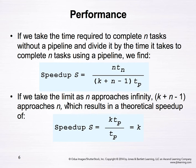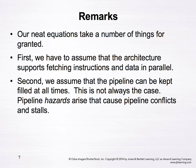If we take the limit as n approaches infinity, the term k plus n minus 1 approaches n. In other words, when n goes to infinity, these terms have the same order, so they cancel out. The result is that speedup S equals k times tp divided by tp, which equals k. The theoretical result shows that the number of stages in the pipeline equals the performance gain when using pipelining compared to not using a pipeline.